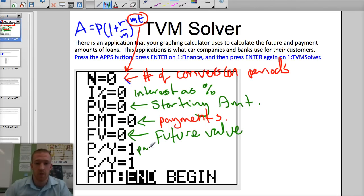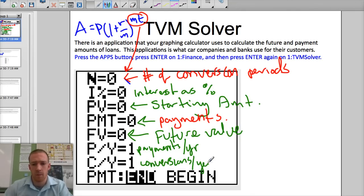This is the payments per year. And then this is the compoundings, or the conversions per year. So if it was monthly, this would be a 12. If it was weekly, this would be a 52, that kind of thing. And these are always going to be the same as each other.